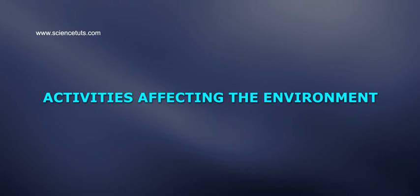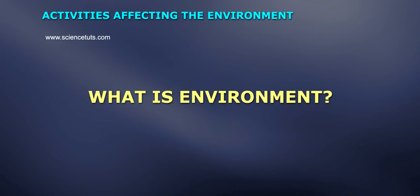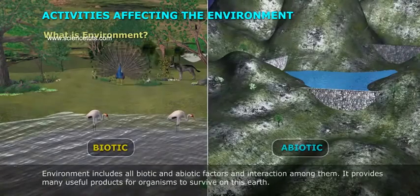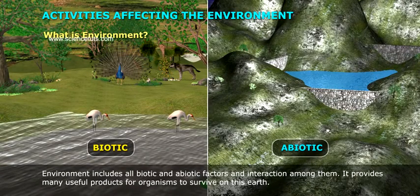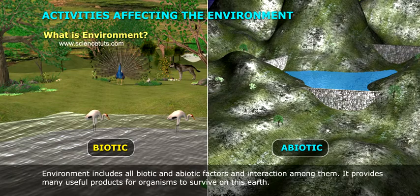Activities affecting the environment. Students, today we will come to know how humans are damaging the environment. What is environment? Environment includes all biotic and abiotic factors and interactions among them. It provides many useful products for organisms to survive on this earth.